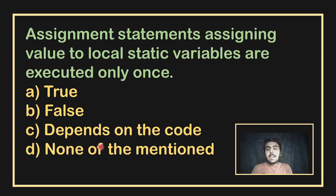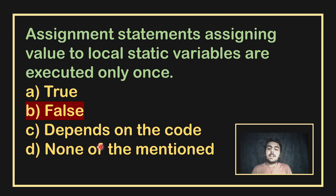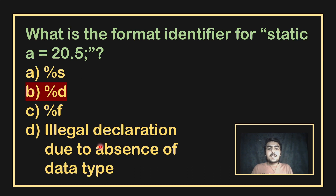Assignment statements assigning values to local static variables are executed only once — is this true or false? The value of a local static variable is defined once and does not need to change again, so it is executed only once. This is true.